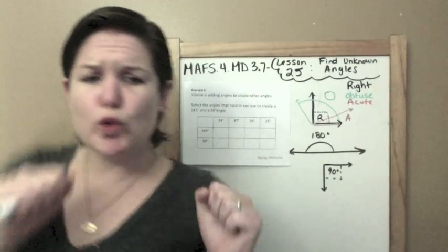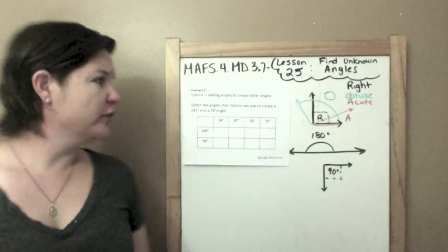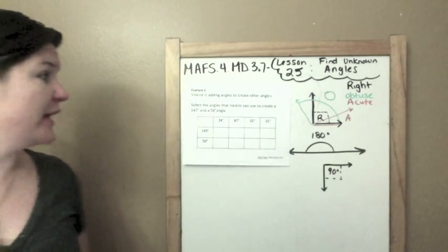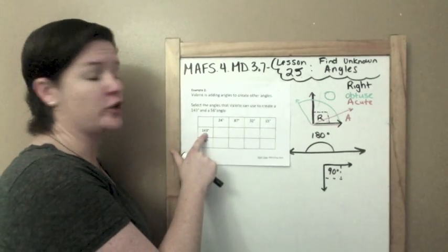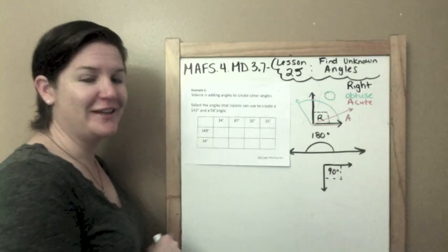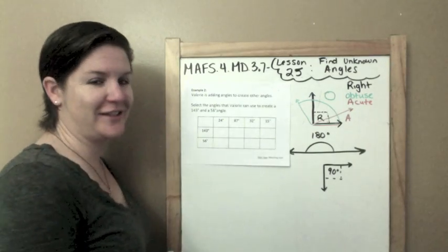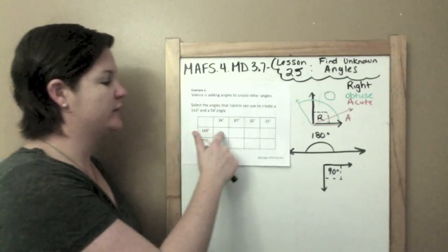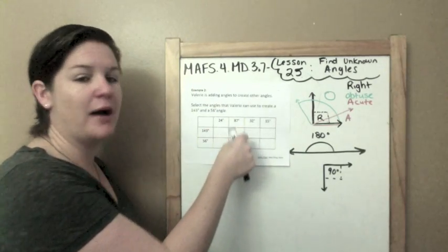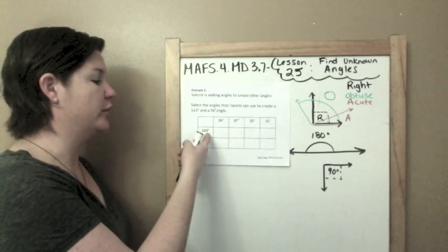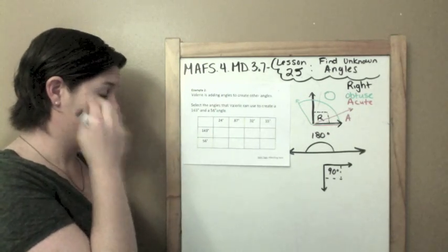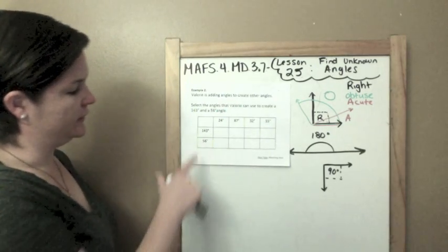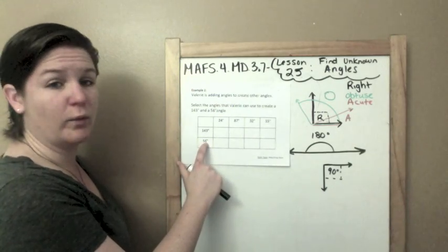Example 2. Valerie! Valerie is adding angles to create other angles. Select the angles that Valerie can use to create a 143 degree angle and a 56 degree angle. All right, so what I need to do is I need to select the angles that I can combine and add them to get the sum of 143 and 56.